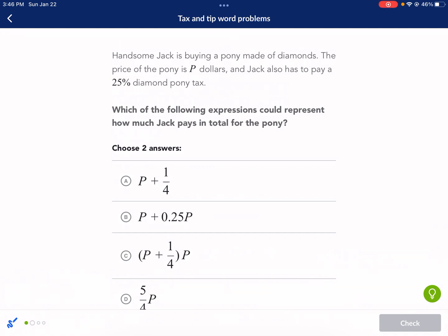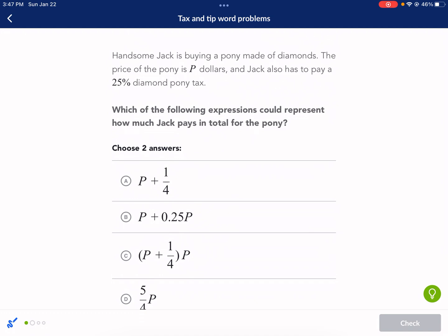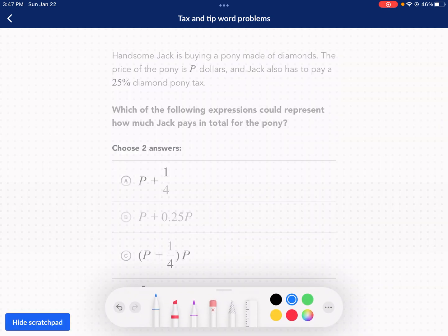Next question. Handsome Jack is buying a pony made of diamonds. The price of the pony is P dollars and Jack also has to pay a 25% diamond pony tax. Very non-real world oriented, but despite what I said at the beginning, which of the following expressions could represent how much Jack pays in total for the pony? So tax is real, obviously, but the situation is kind of bizarre, but we need to figure this out. So kind of what I said earlier. So this is talking about in total. So we already talked about how if you want to find the tax amount, you need to multiply this times the price. So the tax percentage times the price will give you the tax amount. We said that on the last problem.